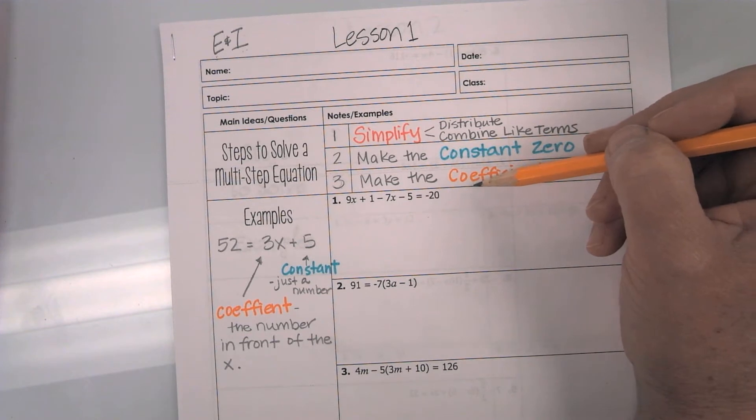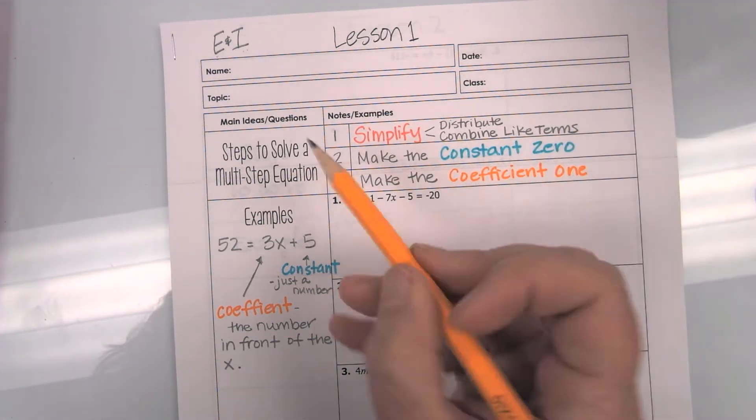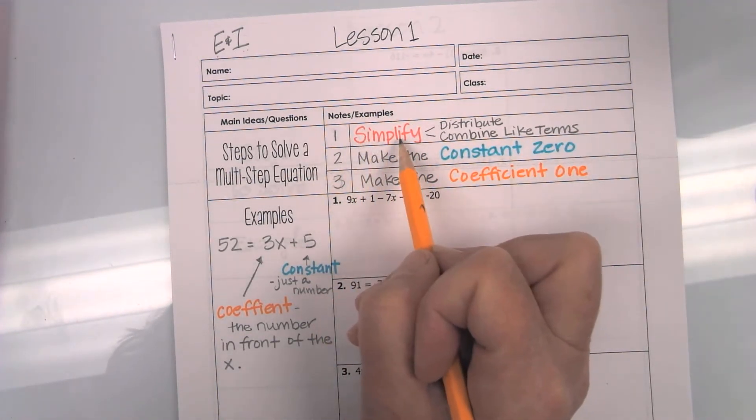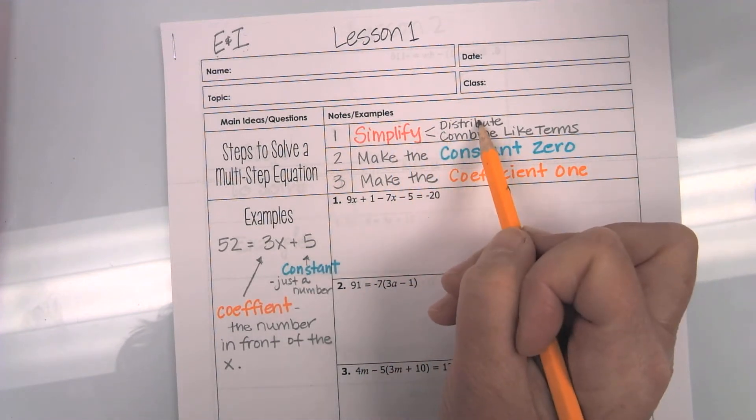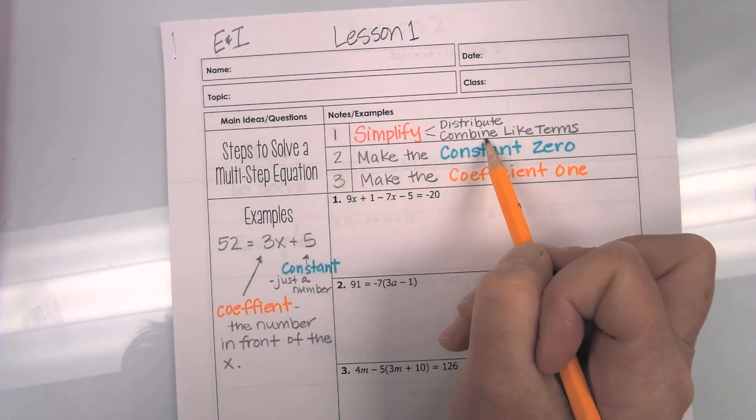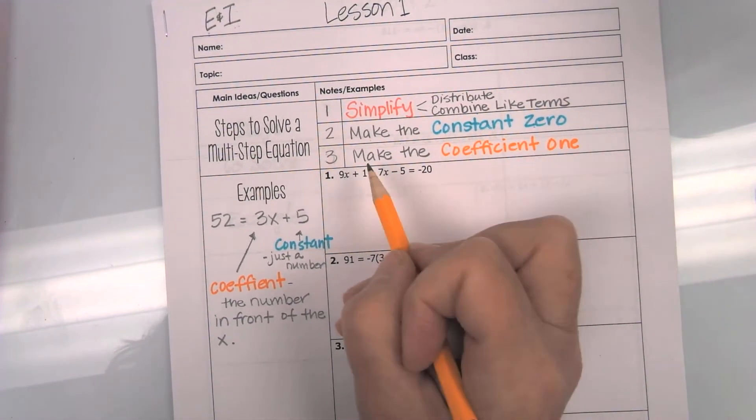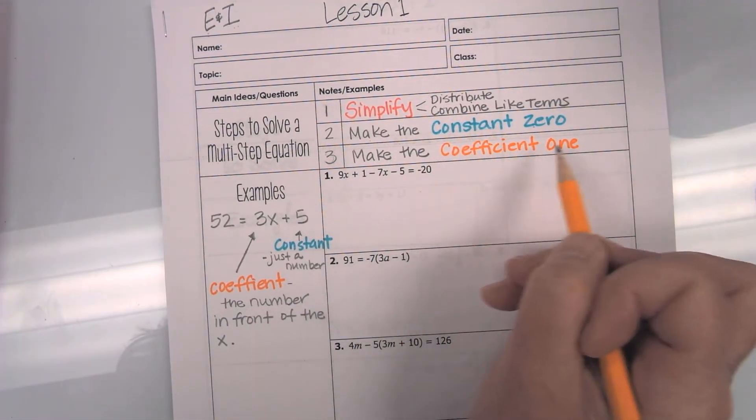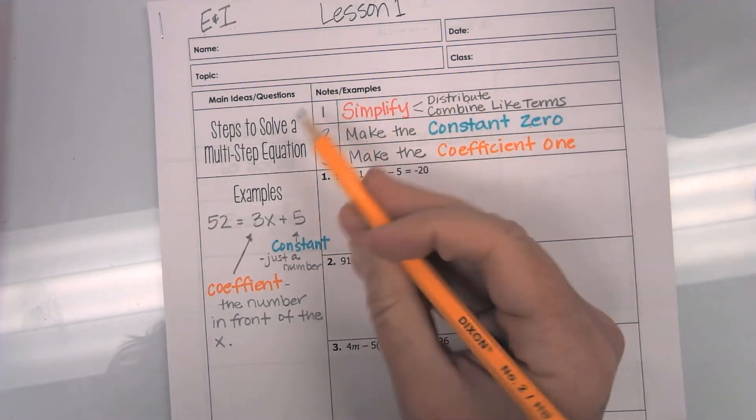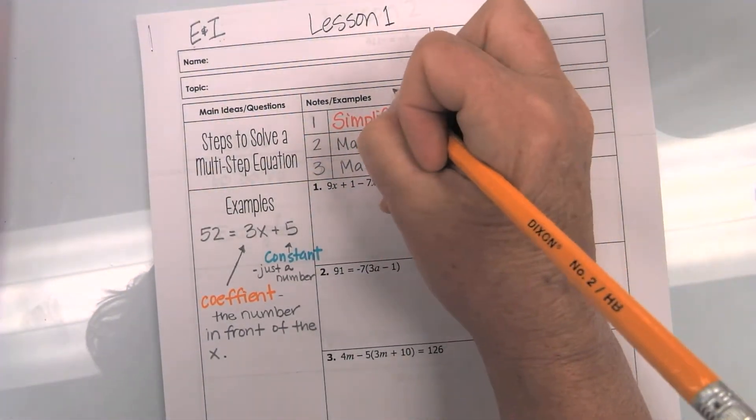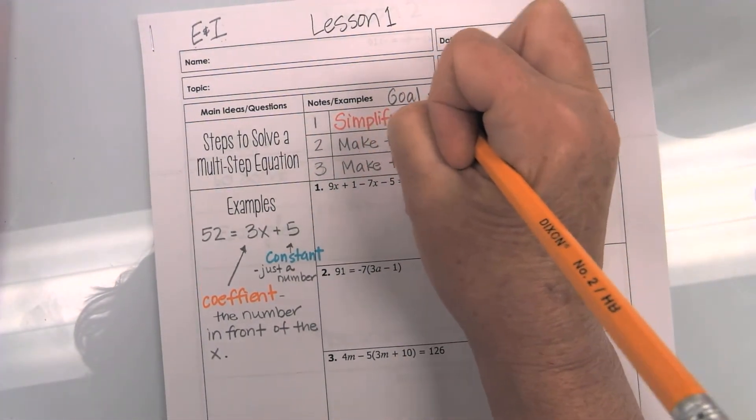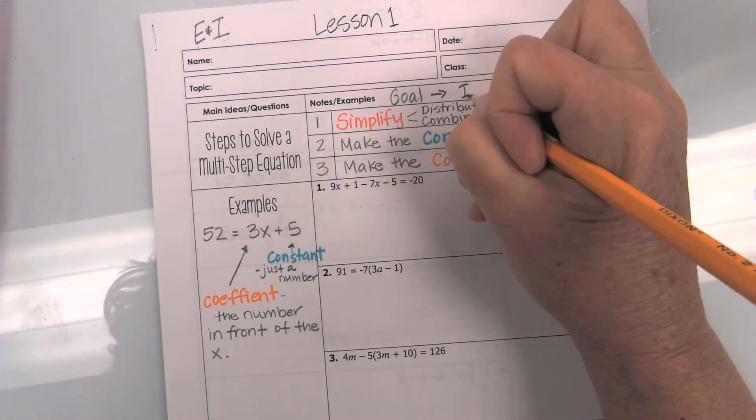Make sure you write carefully and keep track of what you're doing. The first thing that you're going to want to do is simplify. I will show you how to distribute and combine like terms. Next, you will make the constant zero. Finally, you'll make the coefficient one. Now, remember, the whole reason for doing this is our goal, which is to isolate the variable.